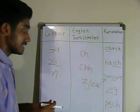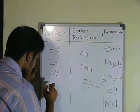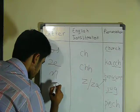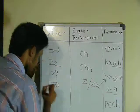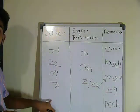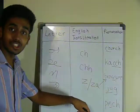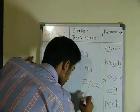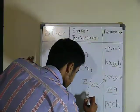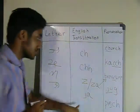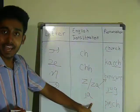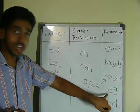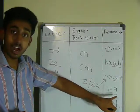The next letter is J. Its English transliteration is J and A. Its pronunciation is same as J in jug.